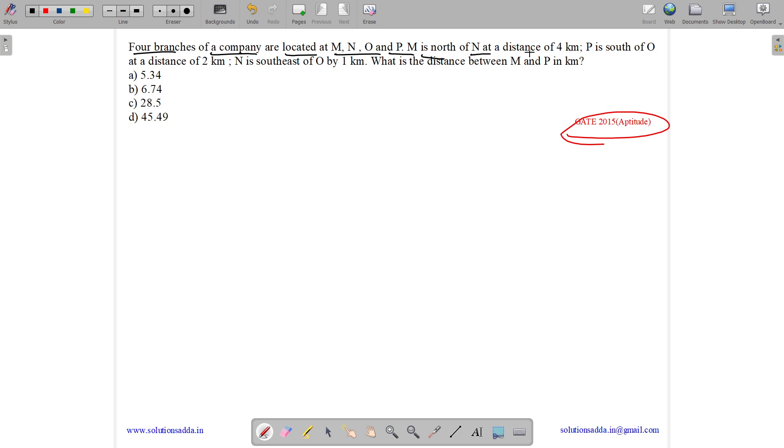M is in the north of N at a distance of 4 km. So M is over here, N is over here and this distance is 4 km. P is in the south of O at a distance of 2 km. So this is our O, this is our P at a distance of 2 km. Let me also draw the direction map.